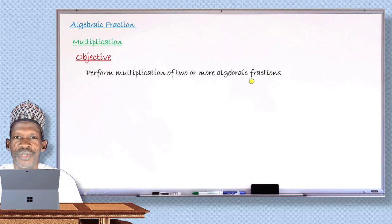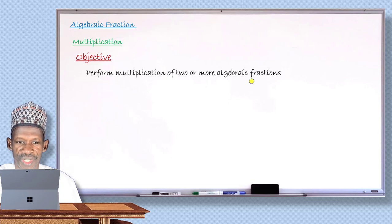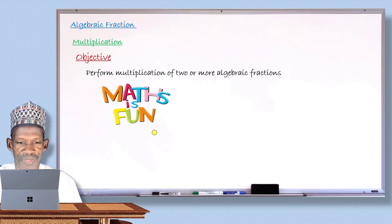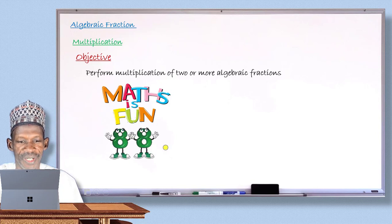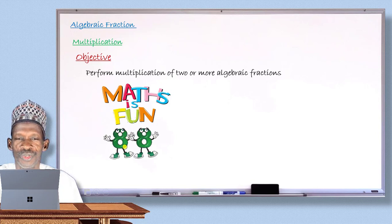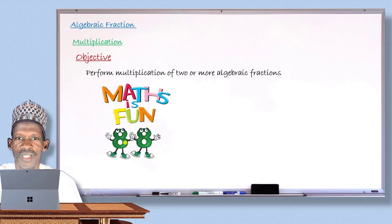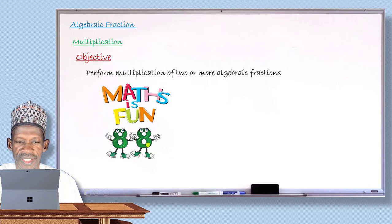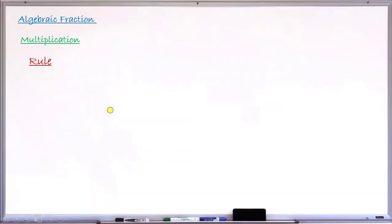As usual, before I begin the lesson, I'll give you another interesting number. That number is 88. 88 is so unique and special. I'll tell you what is special about this number after completing the lesson today, so don't go away.